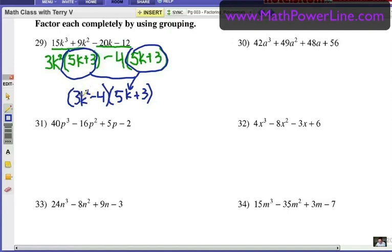What's left? I have 3k squared minus 4. I do need to double check that I can't factor anything else out, and there are no common factors inside that binomial and that binomial. So if I was to multiply that binomial times that binomial, I would have the original problem. Here we are, factored by groups.